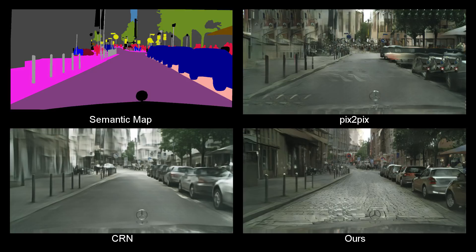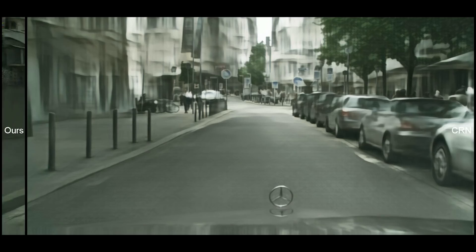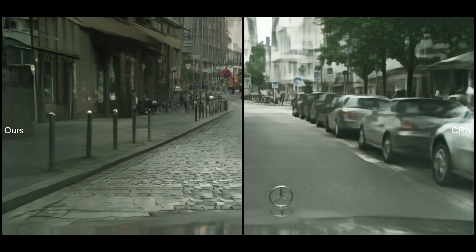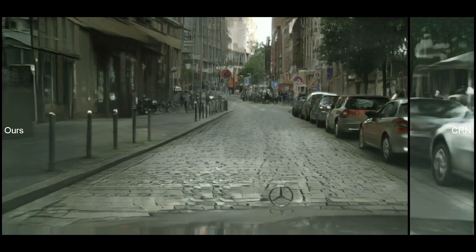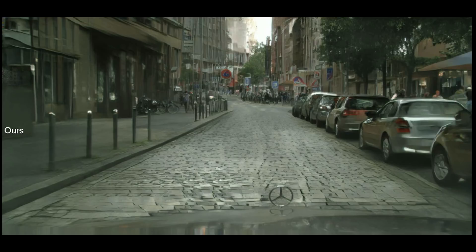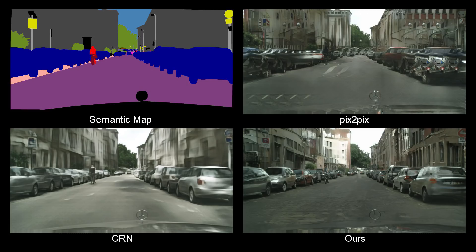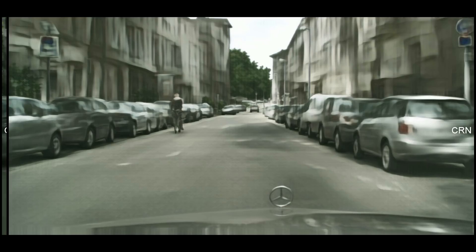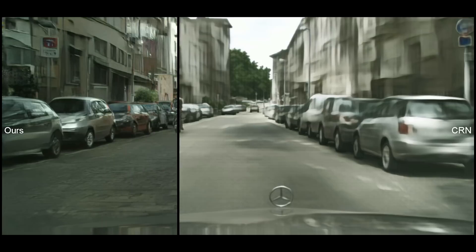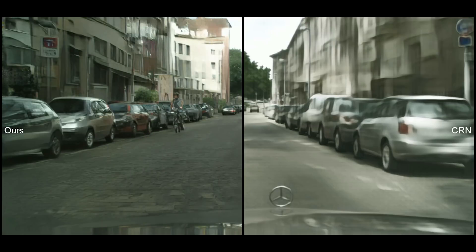Furthermore, we have more realistic textures on the road and the buildings. Finally, our result has finer details in the cars, the buildings, and even the bicyclist.